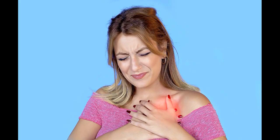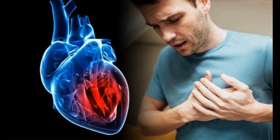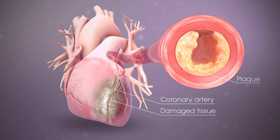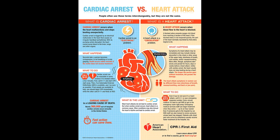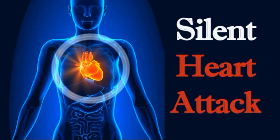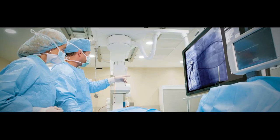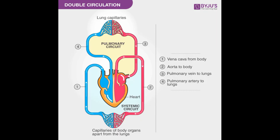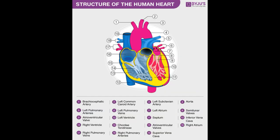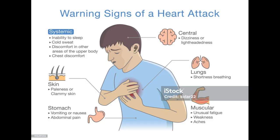About two-thirds of the mass of the heart lies to the left of the body's midline. The wall of the heart consists of three layers: the epicardium (external layer), the myocardium (middle layer) and the endocardium (inner layer). The heart has four chambers. The two superior chambers are the atria and the lower inferior chambers are the ventricles. On the anterior surface of each atrium is a wrinkled pouch-like structure called an auricle.